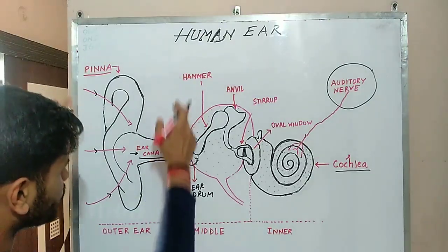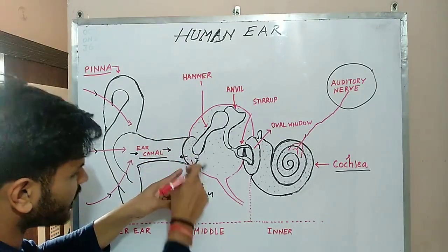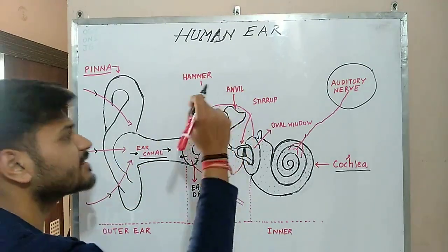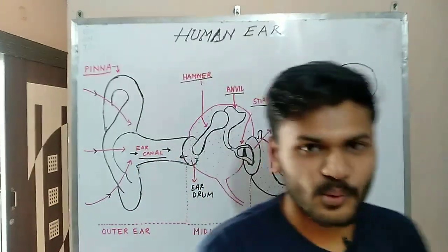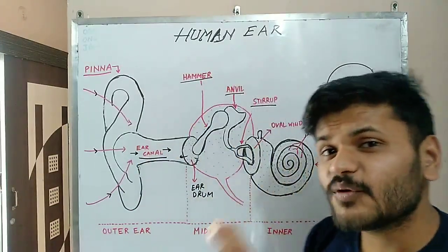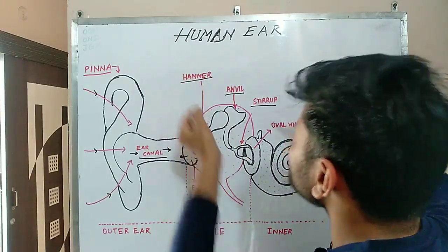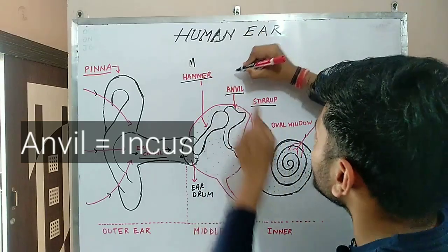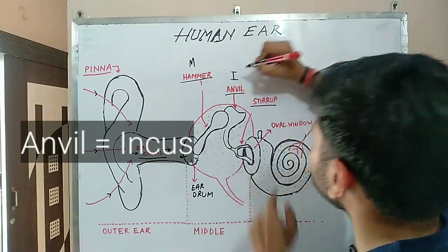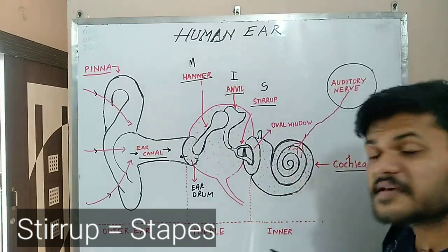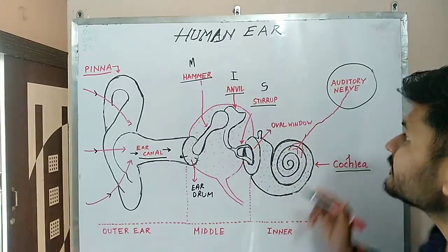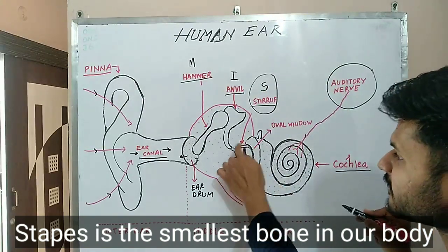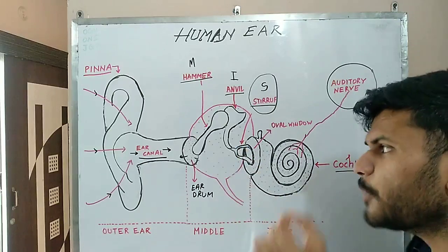The outer ear terminates and the middle ear begins, which contains the eardrum, malleus, incus, and stapes. In some books you will find these bones referred to by other names: hammer for malleus, anvil for incus, and stirrup for stapes. Always keep in mind that the stapes is the smallest bone in our whole body.